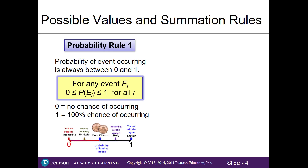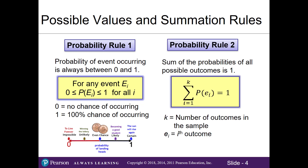The first probability rule is that the probability of something happening is always going to be between 0 and 1, where 0 has no chance of happening and 1 is a 100% chance of happening. Probability rule number 2 states that when we add up all the probabilities of all possible outcomes it should equal 1 or 100%. These two rules are helpful to double check for errors in our calculations.